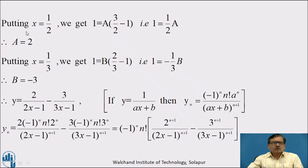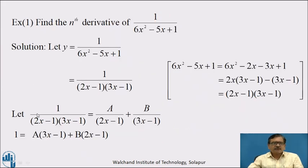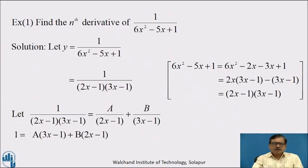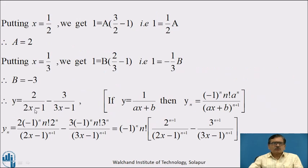To find A, putting x equal to 1/2 on both sides: left hand side is 1, and we get 1 equal to A(3/2 minus 1), that is A times 1/2. Therefore A equals 2. To find B, putting x equal to 1/3: we get 1 equal to B(2/3 minus 1), that is B times minus 1/3. Therefore B equals minus 3. Substituting the values of A and B, we can write y equal to 2 upon (2x minus 1) minus 3 upon (3x minus 1).